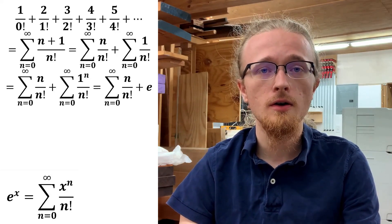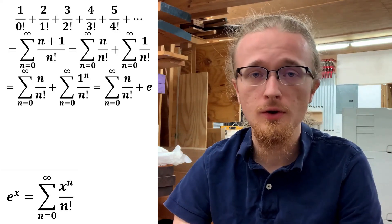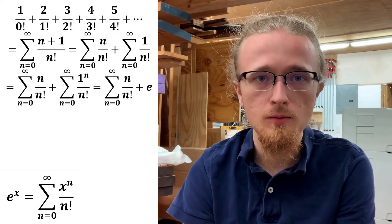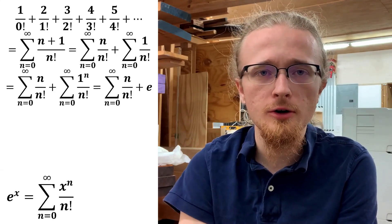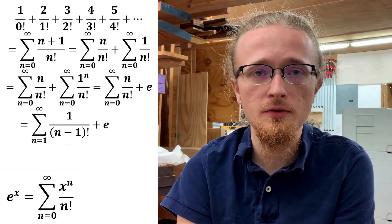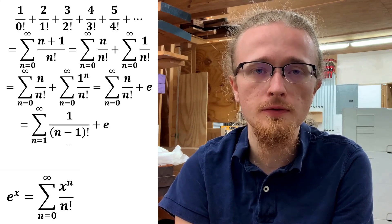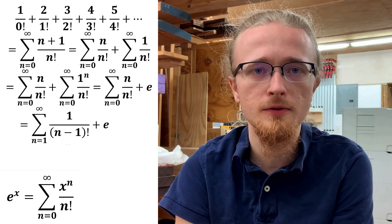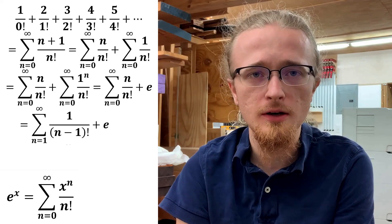With the second term all figured out, all we need to do is work through the slightly more difficult first term, and then our job will be done. The trick with the first term is to realize that you can cancel the factor of n in the numerator with the factor of n in the denominator from the factorial, but there's a bit of a tricky bit here.